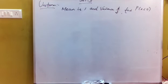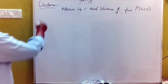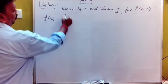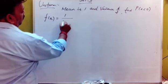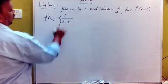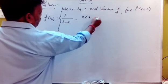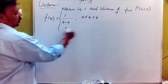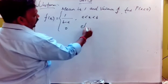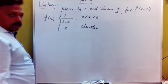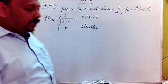Now, the general formula is: PDF f of x is equal to 1 divided by (b minus a), where a ≤ x ≤ b, and 0 otherwise.